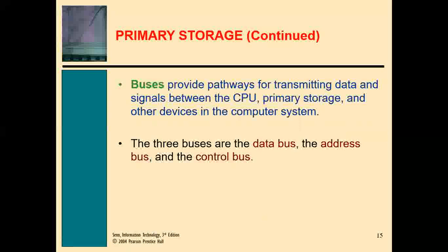The pathways on the motherboard are called buses. There are three buses: the data bus, which carries data; the address bus, which carries the address or actual location of the data; and the control bus, which carries the controls — telling the system what to do with the particular data once acquired.